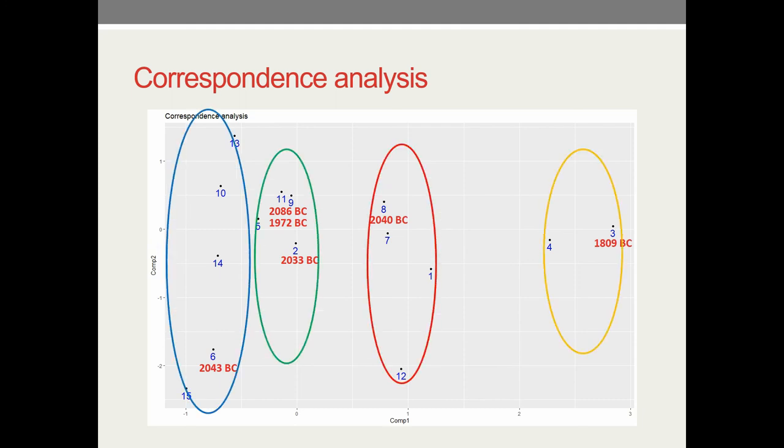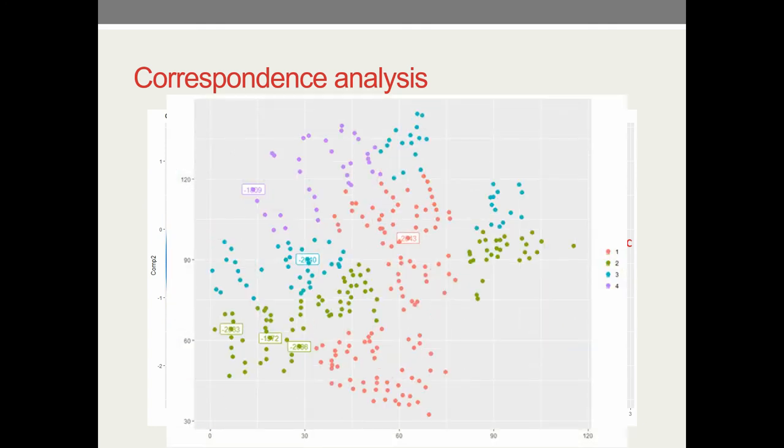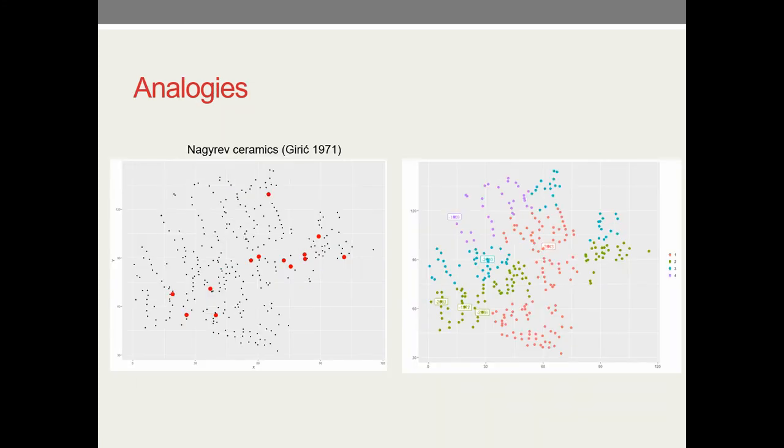Then we wanted to see again if there are some spatial patterns - if these groups that are similar with vessel types, if they are located in the same part of the necropolis. This is what we got. Again there is some spatial patterns. The clusters that are similar are close to each other. This could be a chronology but it's hard to say with six dates.